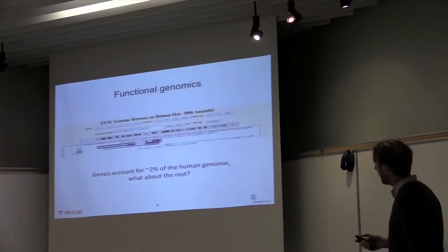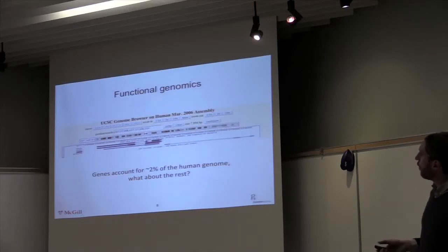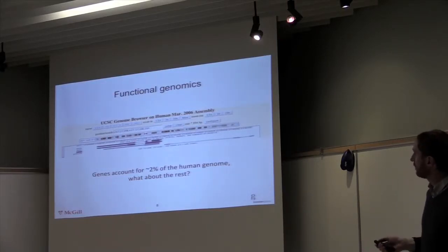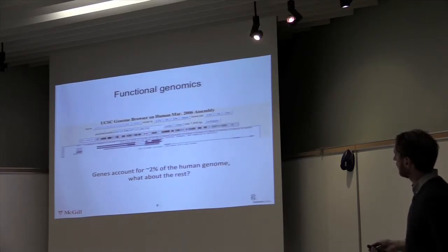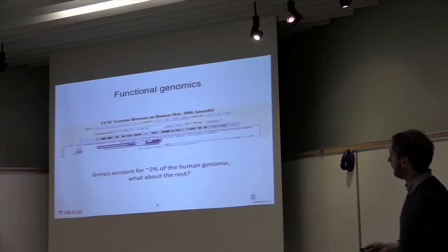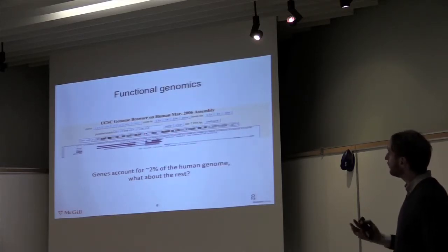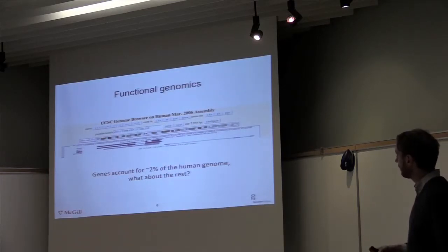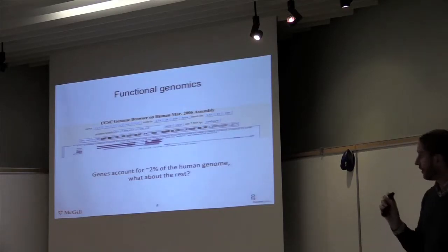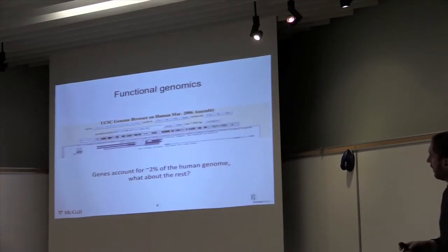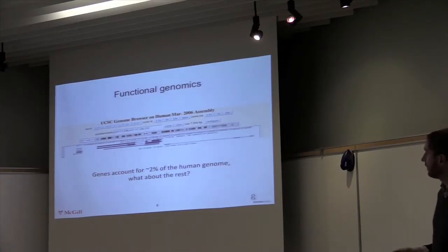If you go back — this is an oversimplification of what we knew after the human genome sequencing — this is a snapshot from the human genome browser. Even close to a decade ago, we had the identification of genes within the human genome and a very good catalog for that. There was a very clear signature within the human genome associated with coding sequences. But this only accounts for two or three percent of the human genome.